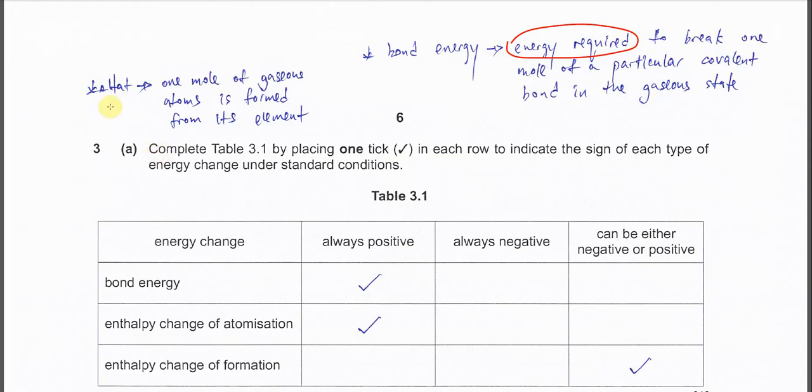For the enthalpy change of atomization, it's one mole of gaseous atom formed from its elements. So elements now try to form gaseous atom, so you need to absorb the energy, so that's why it's always positive.